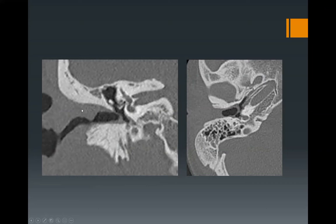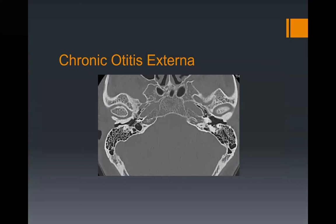As you saw in the prior case, there's periauricular soft tissue swelling. Normally in a simple otitis externa, you will not see bony changes — no osteolysis or bone erosion. With chronic otitis externa, when you have multiple episodes of acute otitis externa, you get a periosteal reaction. Bone gets laid down with each acute inflammatory event with periostitis of the bony EAC. The infection resolves, it happens again, you lay down more bone, and eventually you get concentric narrowing of the external auditory canal.